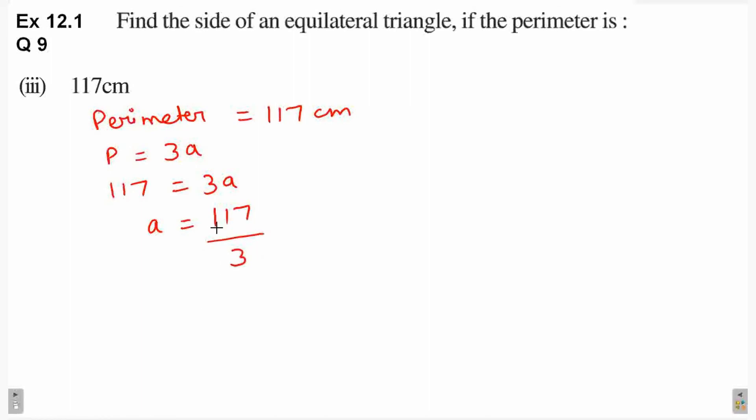Abh yae dekhou 117 3 ke saath jata hai ya nahi. 7 plus 1 plus 1 equals 9. Digits ka sum 9 hai. 9 is divisible by 3. Matlab 117 3 ke saath jara da. Is ko hum divide kar dite hai.